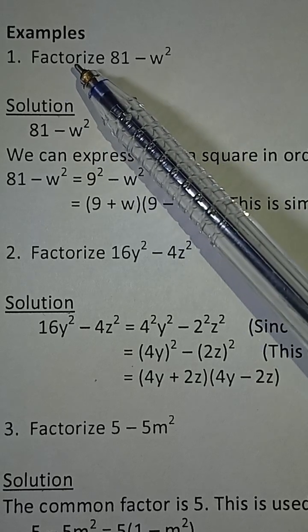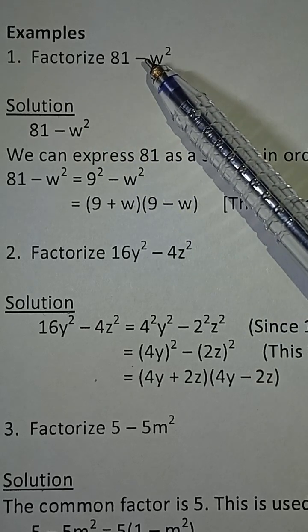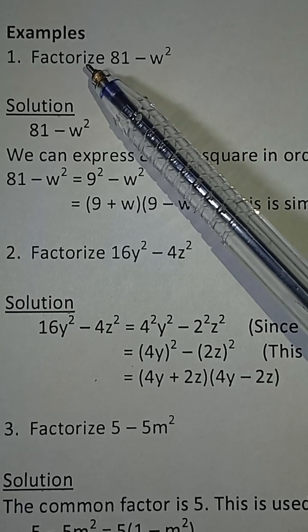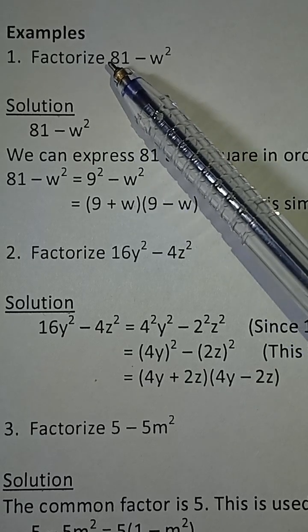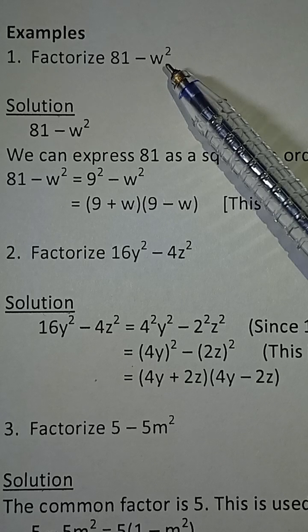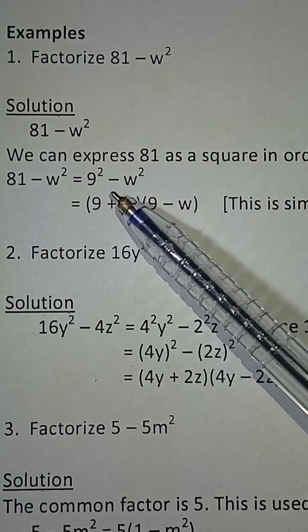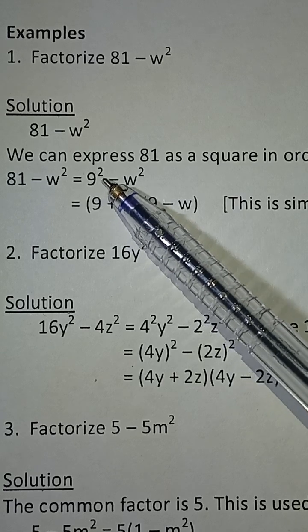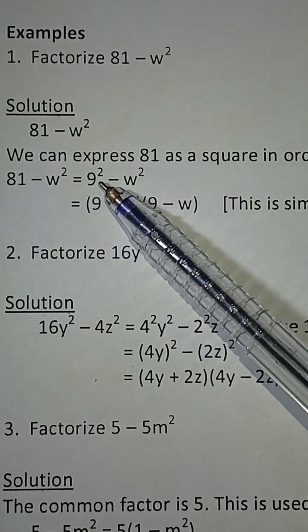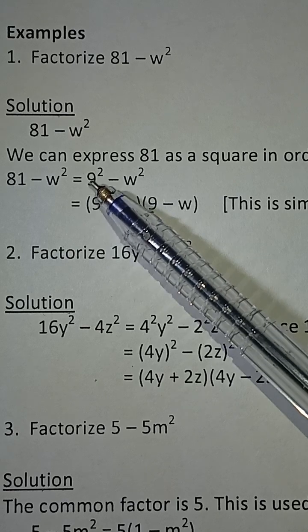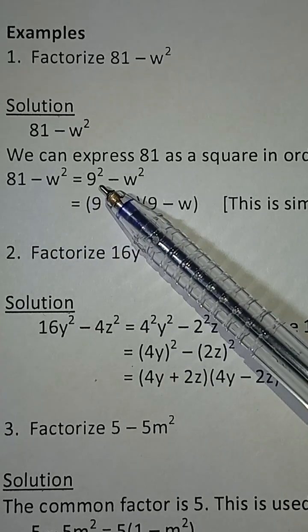This question says factorize 81 minus w². Factorize can also be written as factor. So factor 81 minus w². In order to do this, if you look at 81, it can be expressed as 9². So we express 81 as 9².